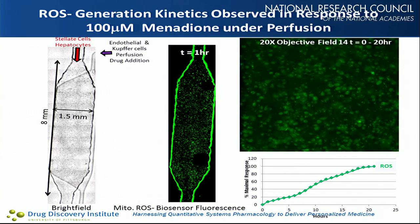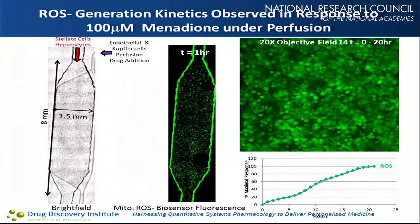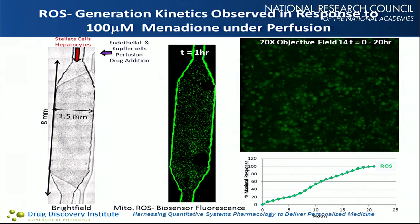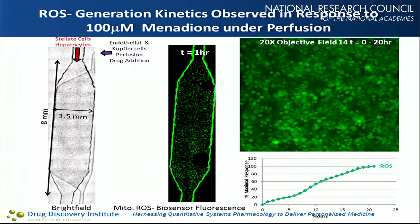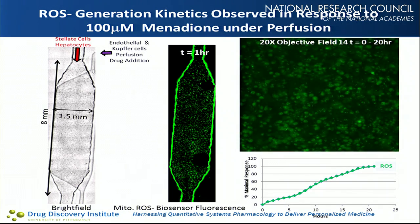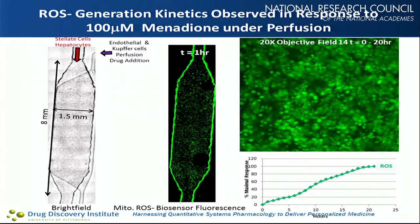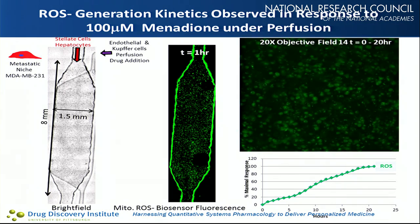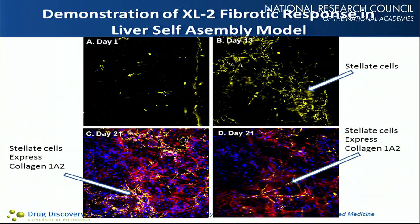A bright field image of the layered liver acenus model shows two layers. A time lapse of the ROS biosensor targeted into the mitochondria shows that over a 24-hour period when dosed with 100 micromolar menadione, we get dramatic ROS production as predicted. One interesting finding is great heterogeneity on a cell-by-cell basis in response to a uniform treatment with the drug — something worth noting. We can also put metastatic breast cancer cells into the lower chamber of this device, sitting initially with the hepatocytes.